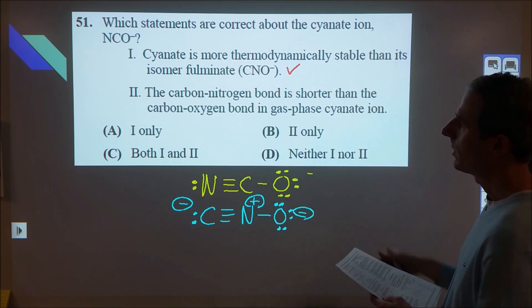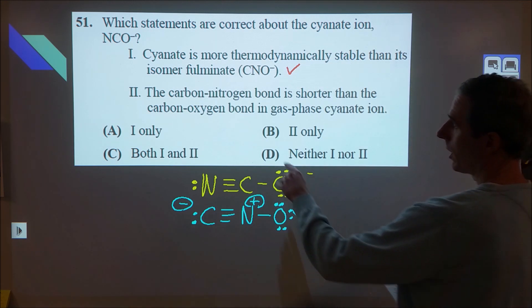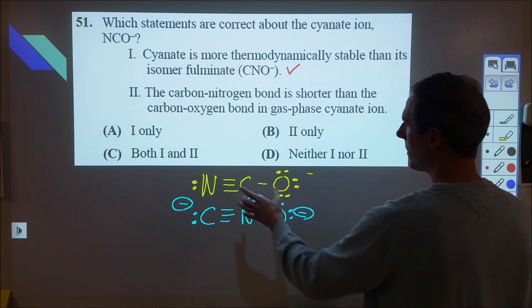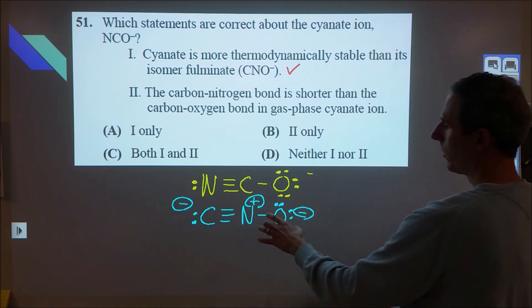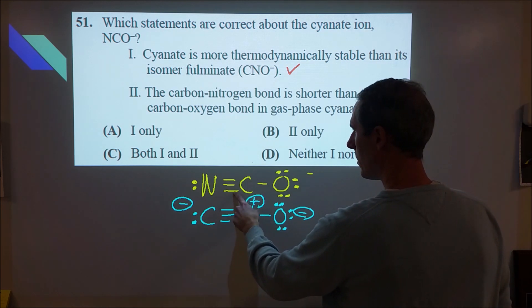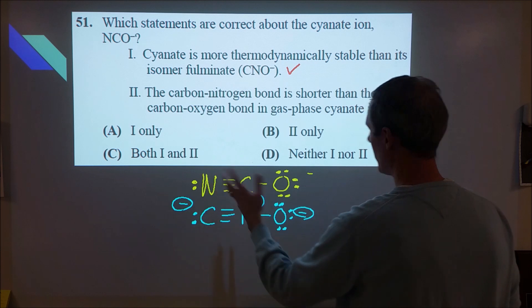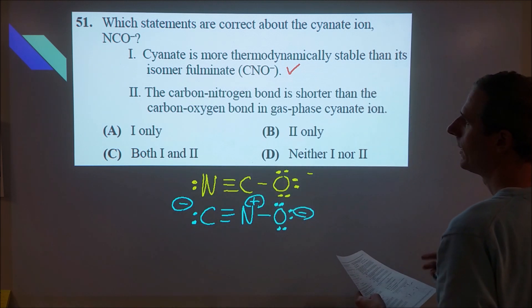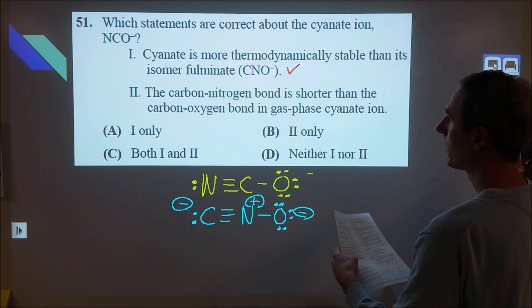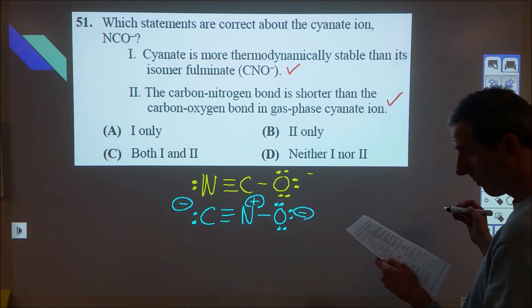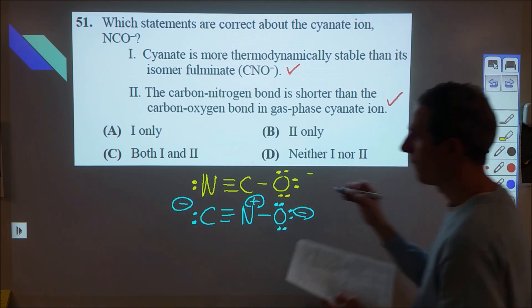And then the second one says the carbon-nitrogen bond is shorter than the carbon-oxygen bond in the gas-phase cyanate ion. Regardless of which structure we're looking at, even if we consider the resonance, we're going to see perhaps maybe a little bit of resonance here and there on this one. This one, the carbon-nitrogen bond is, of course, going to be shorter because of that triple bond. So we're seeing that both of those are true, and therefore we're picking C.